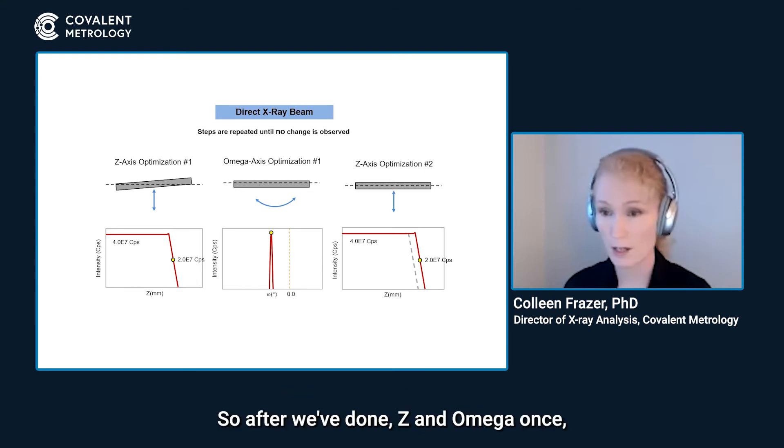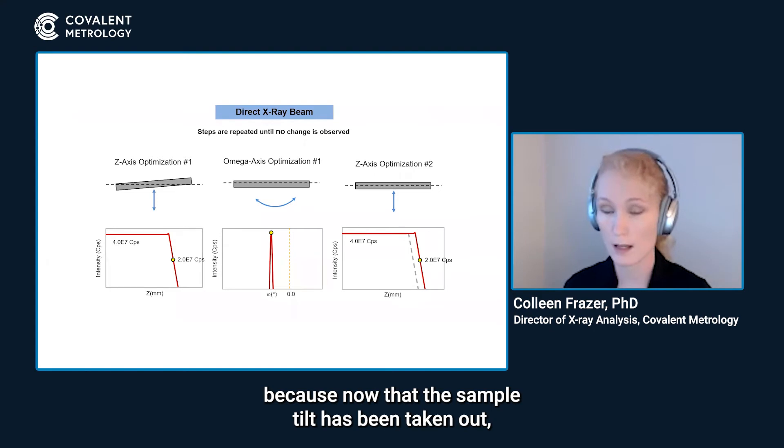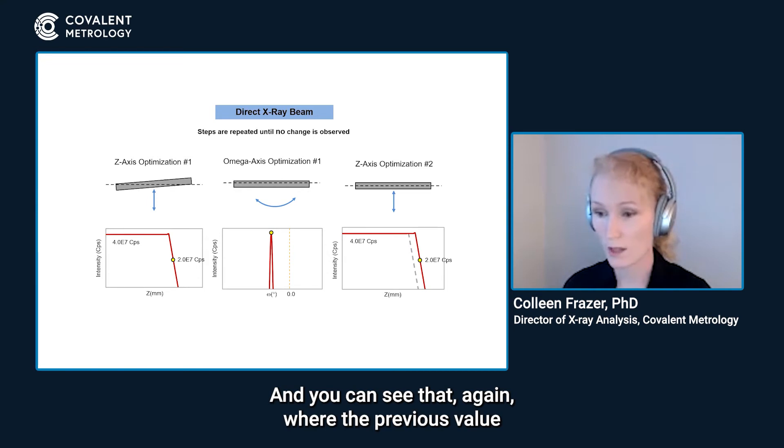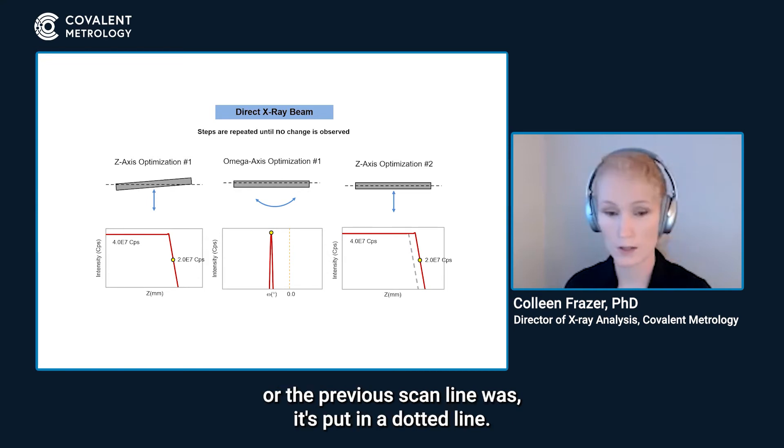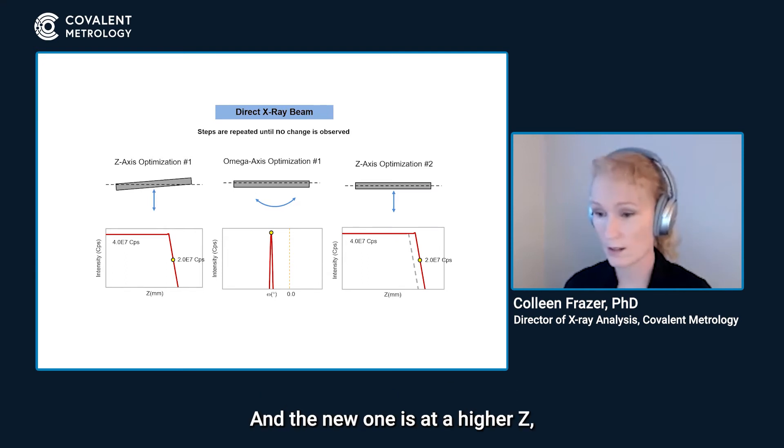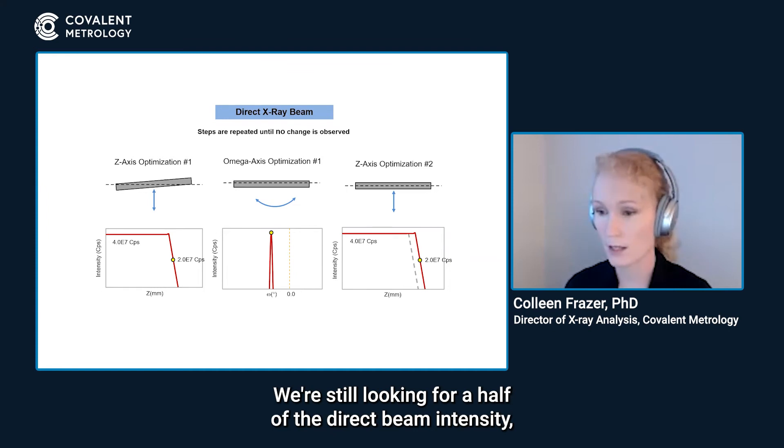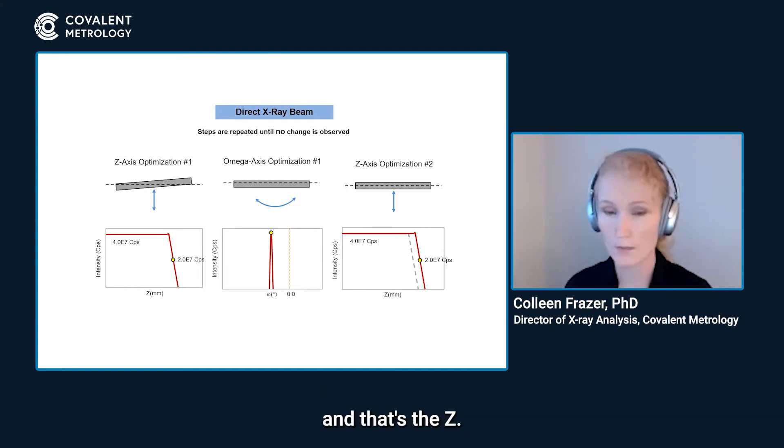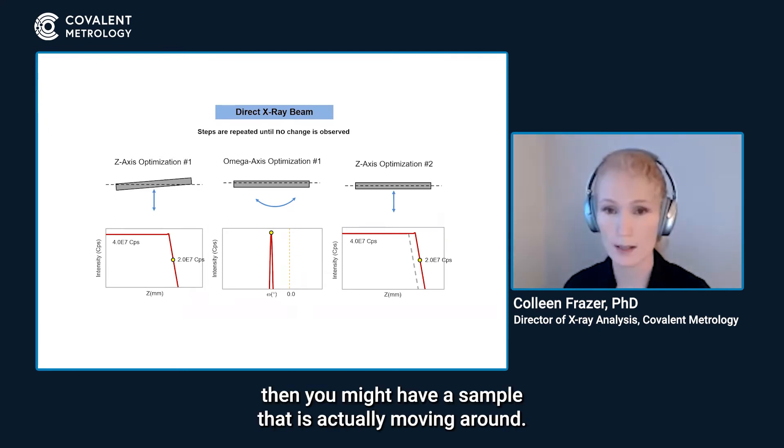So after we've done Z and omega once, we're going to return to Z because now that the sample tilt has been taken out, the Z value will change and you can see that again where the previous scan line is put in a dotted line and the new one is at a higher Z because the sample is no longer tilted. We're still looking for half of the direct beam intensity and that's the Z. So it's not uncommon to have say three Z iterations and at least two omega iterations. Shouldn't take more than five minutes total and again if they're not converging then you might have a sample that is actually moving around.